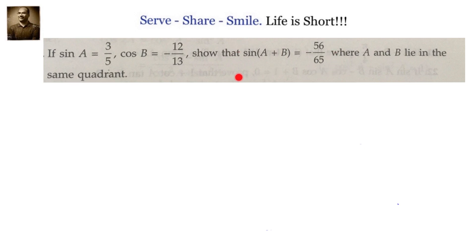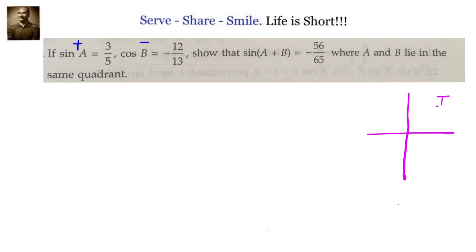sin(A) is 3/5, which means sine is positive. cos(B) is -12/13, which means cosine is negative. Now we need to find out the quadrant in which sine is positive and cosine is negative. For that, let's draw all the quadrants.